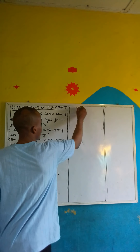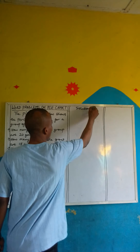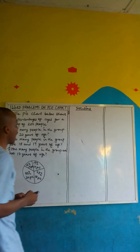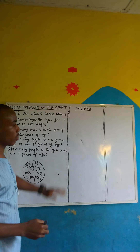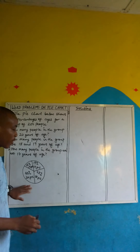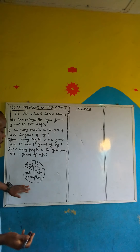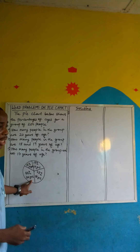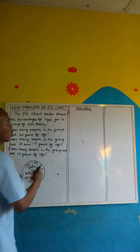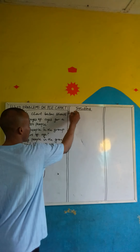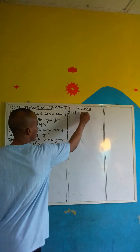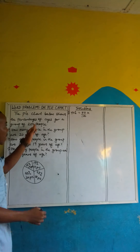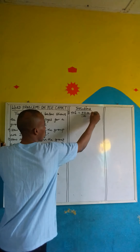Let's go with the first one. It says how many people in the group are 20 years of age? Check from your chart — 20 years of age is 40% of the people in the group. 40% is simply 40 over 100, and it has to be multiplied by the total, which is 200.